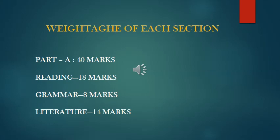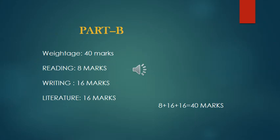First we will start with Part A. Part A is of 40 marks and its reading section carries 18 marks. Grammar is of 8 marks and literature section is of 14 marks. Part B is also of 40 marks. It too has a reading section of 8 marks. In writing section, the question carries 16 marks. In literature, the weightage is same, that is 16 marks, making it a total of 40 marks.